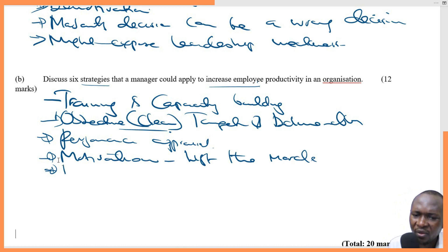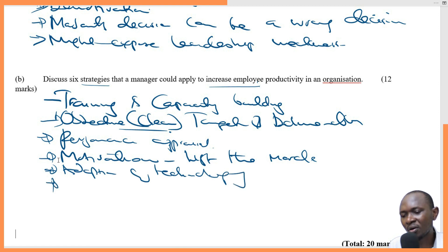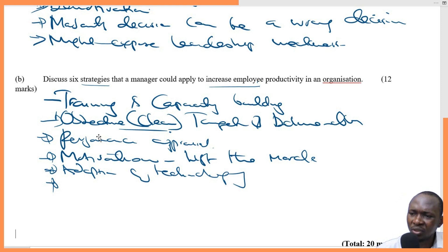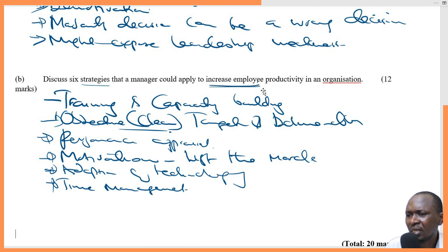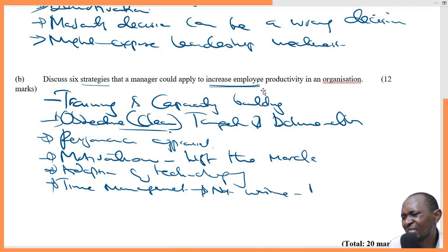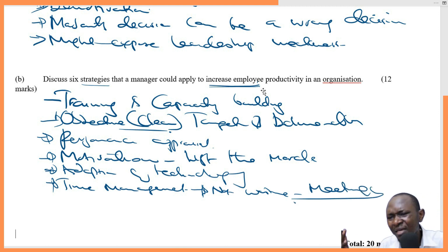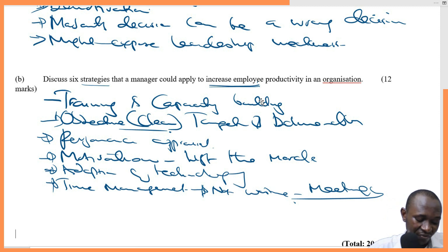Fifth, adoption of technology. Technology goes a long way in enhancing and easing the work of employees, making it faster and better. The organization might think of supporting employees with the necessary tools and technology required to deliver the best results. Sixth, time management. The organization should support employees on time management — for example, not wasting a lot of time on unnecessary meetings, which hinders productivity. Time management technique is very important.